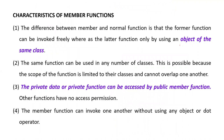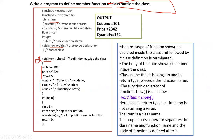The next topic covers the characteristics of member functions. A normal function can be invoked freely, whereas a member function must be invoked by an object of the same class. The same function name can be used in any number of classes because the scope of the function is limited to its class. Private data can only be accessed with the help of a public member function. Member functions can invoke one another without using any object or dot operator.